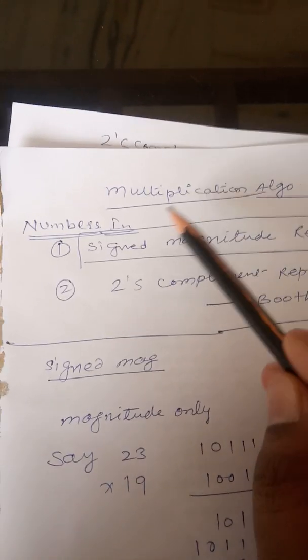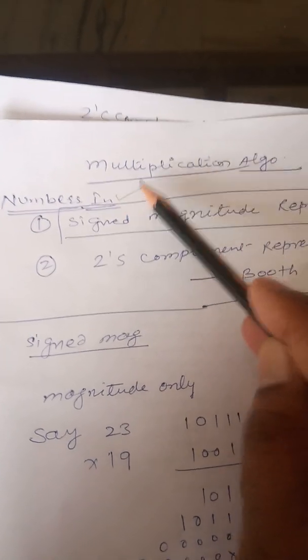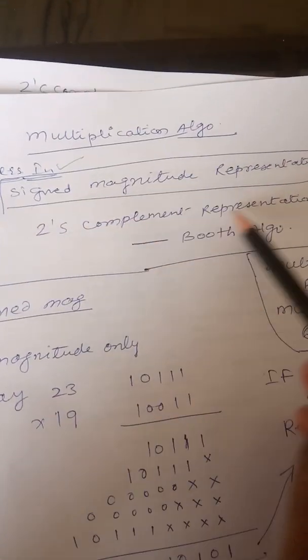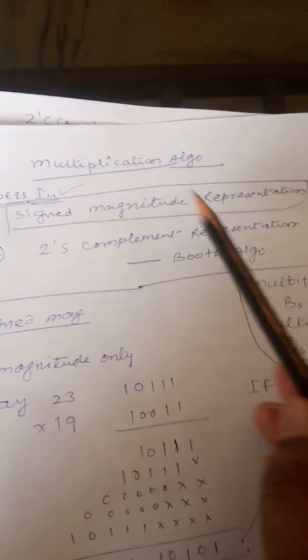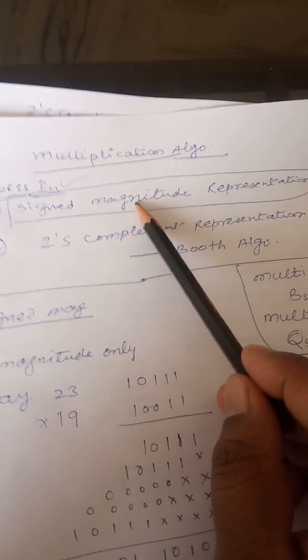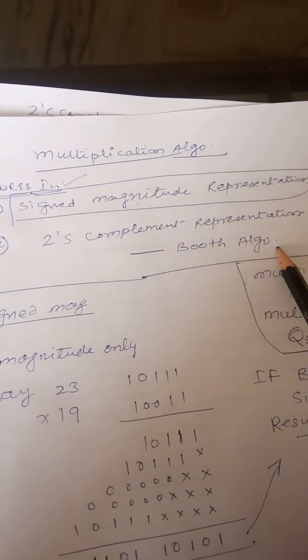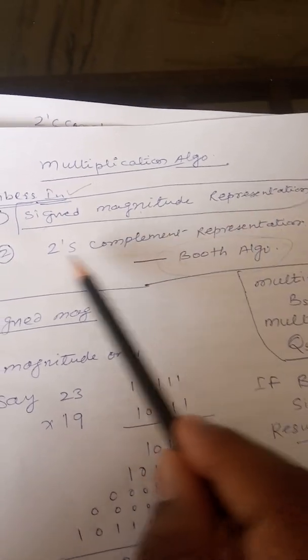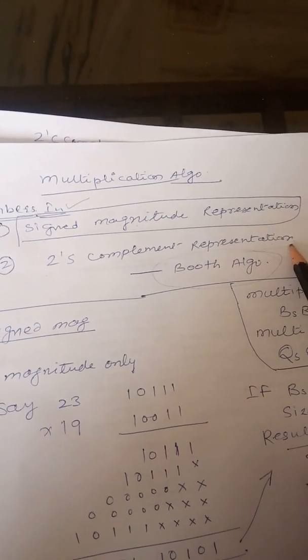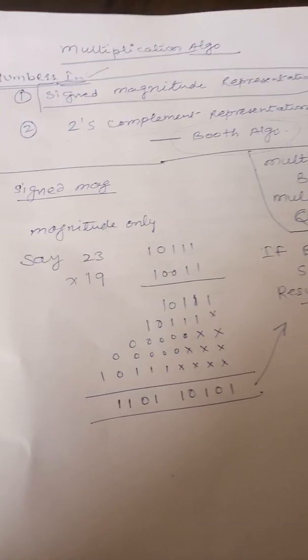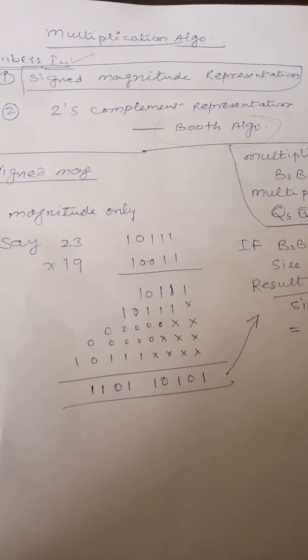So numbers are represented in two forms as you know: sign magnitude numbers and two's complement form. So we will multiply the sign magnitude numbers in one algorithm and in the second algorithm which is called the Booth algorithm we will take two's complement representation numbers multiplication. So now you first take sign magnitude number multiplication.